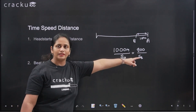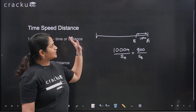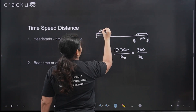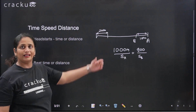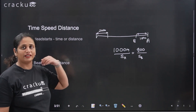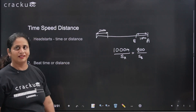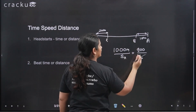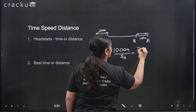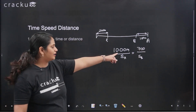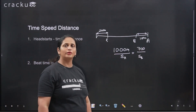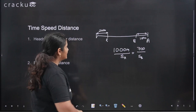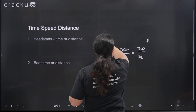If both a head start and a beat distance are present — say a 200 meter head start and A still ends up 100 meters ahead — then B actually ran 1000 minus 200 minus 100, which is only 700 meters, in the same time A ran 1000 meters. That gives you the new ratio of speed of B to speed of A.